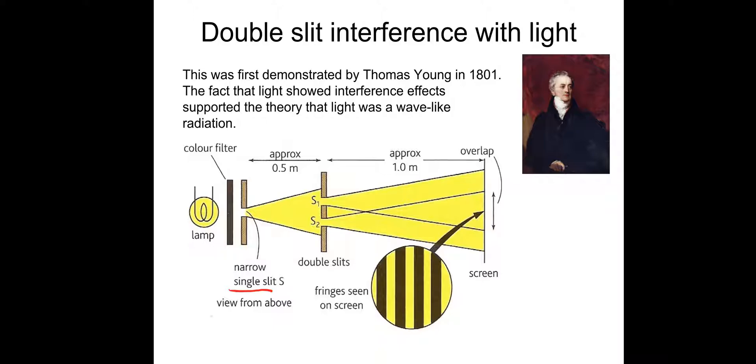Then we get some superposition of the waves, and we get some complete constructive interference, which is where we get the bright fringes. And we get some complete destructive interference where we get the dark fringes.